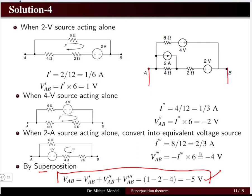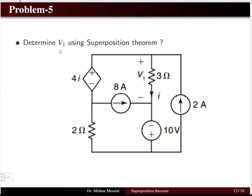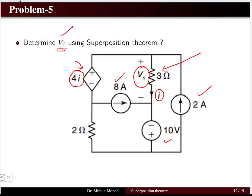You can validate the answer using nodal analysis to confirm VAB equals minus 5 volt. Problem 5 — the sixth problem total — requires determining the voltage V1, the drop across the 3 ohm resistor. We have an 8 ampere current source, a 10 volt voltage source, and a 2 ampere current source as independent sources, plus a dependent voltage source of magnitude 4I, where I is the current through the 3 ohm resistor. There are 3 independent sources, so V1 equals V1 dash plus V1 double dash plus V1 triple dash.